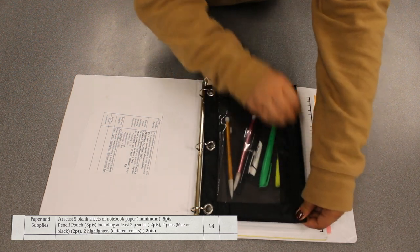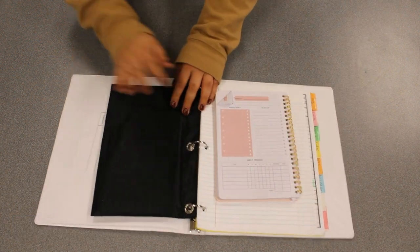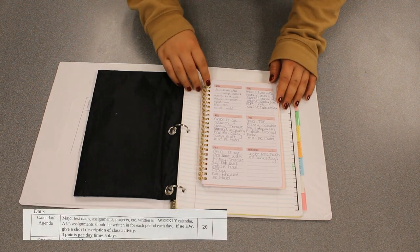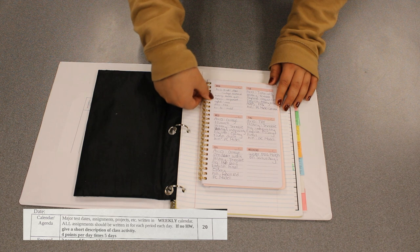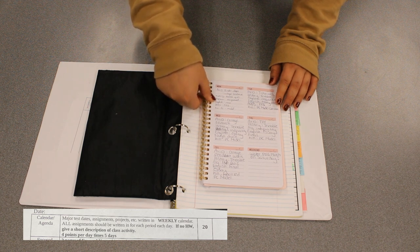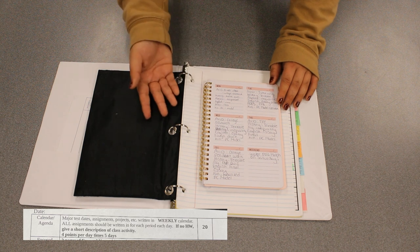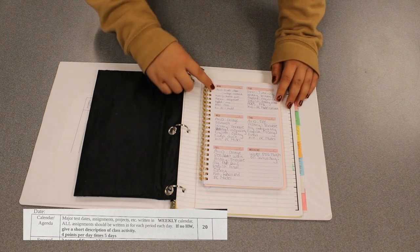I have yellow and green and this is gonna be your planner so this will help you organize what you need to do for the day. You're gonna write down what you did and what you have to do for every six periods and this is gonna be for every day of the week. If you don't have any homework for that day you can just write down what you did in class.